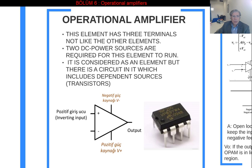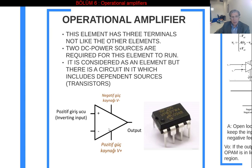Two DC power sources are required for this element to run — one negative power and one positive power — to run this operational amplifier. Although it is considered as an element, there is a circuit inside it which includes dependent sources and transistors. So inside it, there are many transistors.